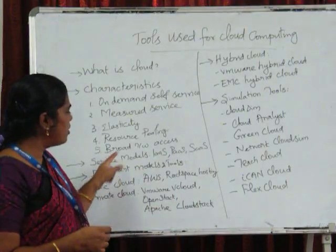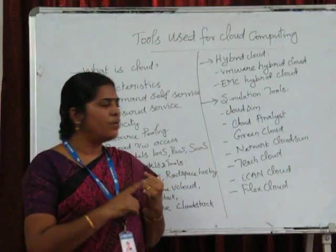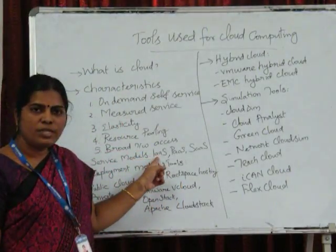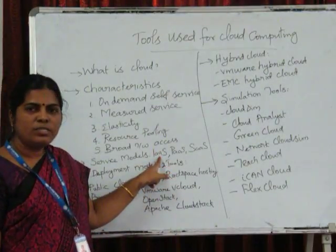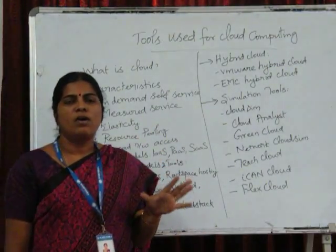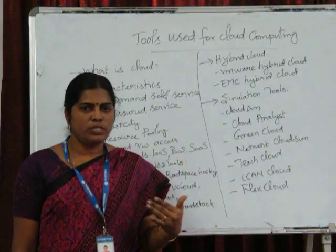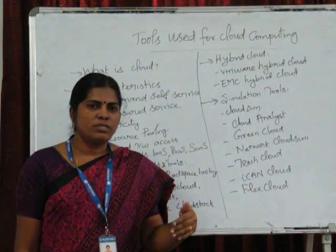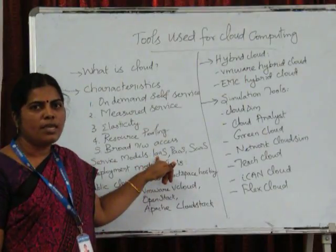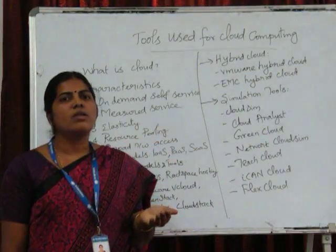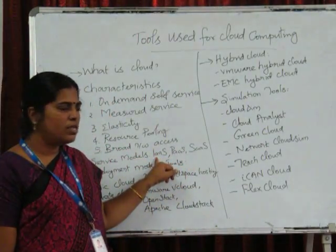Next we will see what are the different service models available. We are having three types of service models. The first level is the lowest level — that is infrastructure as a service, IaaS. In infrastructure as a service, we consider only the hardware components. The hardware components — computer systems, even printers — all the hardware components are coming under IaaS. If you are getting a service for those hardware systems, that is coming under infrastructure as a service.